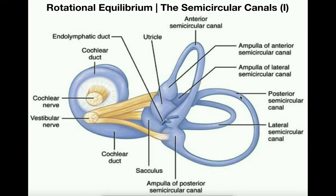In all three cases there is rotation, so the semicircular canals detect changes in rotational equilibrium. Ultimately, the signals from all three semicircular canals, along with signals from the utricle and saccule, are sent through the vestibular nerve, which connects with the cochlear nerve and ultimately becomes the vestibulocochlear nerve — cranial nerve number eight.